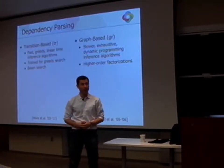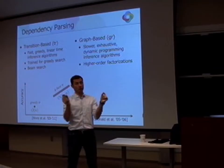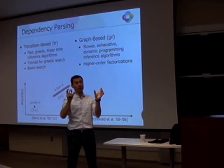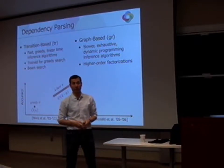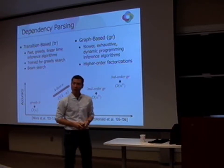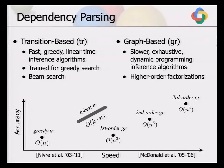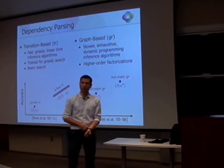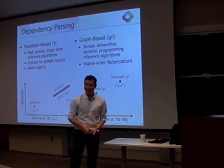What do we mean by first-order and second-order? It's about factorizations — whether you have features over just a pair of words (head and modifier), or whether you also take siblings and grandparents into account. In first-order parsing you look only at the pair of words — head and modifier — and your dynamic program stitches together the parse tree from those arcs. In second-order parsing, your dynamic programming items are not individual arcs but arcs with a sibling attached, giving you more information to condition features on, but at significantly higher computational cost.